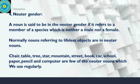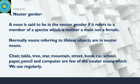The fourth gender is called the neuter gender. What's a neuter gender? A noun is said to be a neuter gender if the member of the species is neither a male nor a female. Such an object is called a neuter gender. It is lifeless — lifeless objects are in neuter gender.